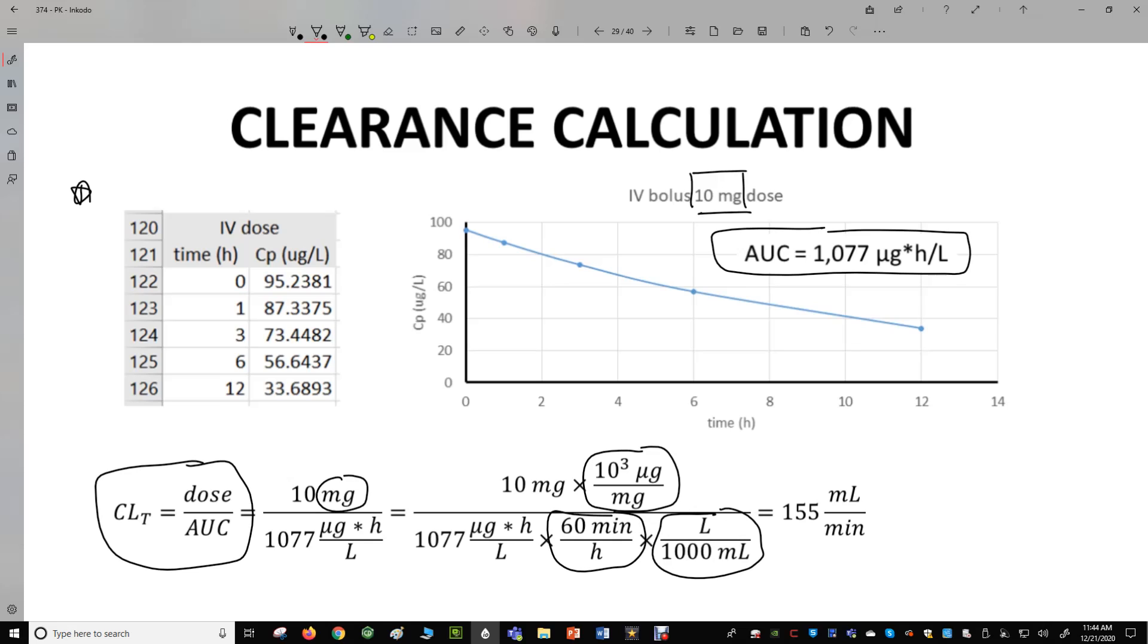Our clearance, total clearance CLT, is 155 milliliters per minute. So every minute, 155 milliliters of plasma is completely scrubbed, cleared, of our drug molecule. A standard patient has a mass of 70 kilograms. Dividing our clearance value by 70 kilograms gives a mass normalized clearance of 2.2 milliliters per minute per kilogram.